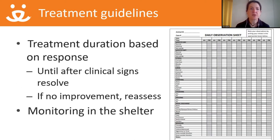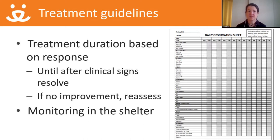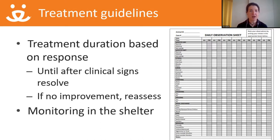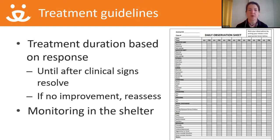Treat based on response until after clinical signs resolve — not just for a fixed number of days. Monitor them and reassess if not improving; get a veterinarian involved if the case is being managed under protocol. Daily observation sheets can help staff track each cat's status and flag when illness is becoming more serious — for example, when a cat stops eating and more aggressive treatment is needed.